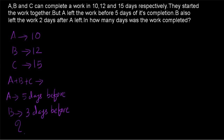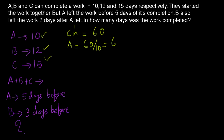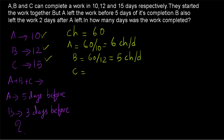So let's take the chocolate approach. The number of chocolates is equal to the total amount of work to be done, so it should be taken as the LCM of 10, 12 and 15, which gives us number of chocolates equal to 60. A will be having 60 chocolates in 10 days, which gives us A having 6 chocolates per day. B will be having 60 chocolates in 12 days, so B will be having 5 chocolates per day. And C is having 60 chocolates in 15 days, so C will be having 4 chocolates per day.